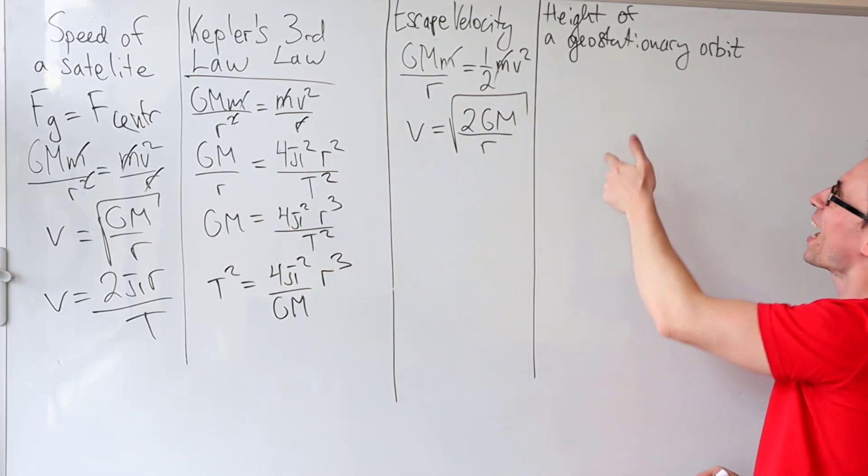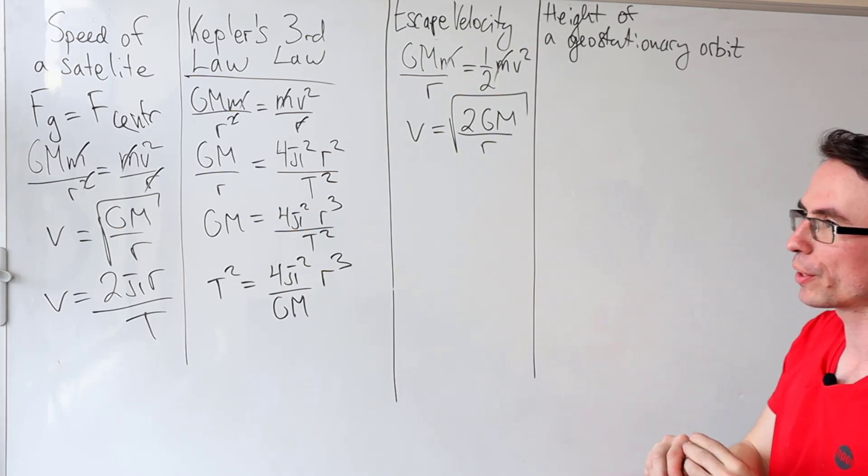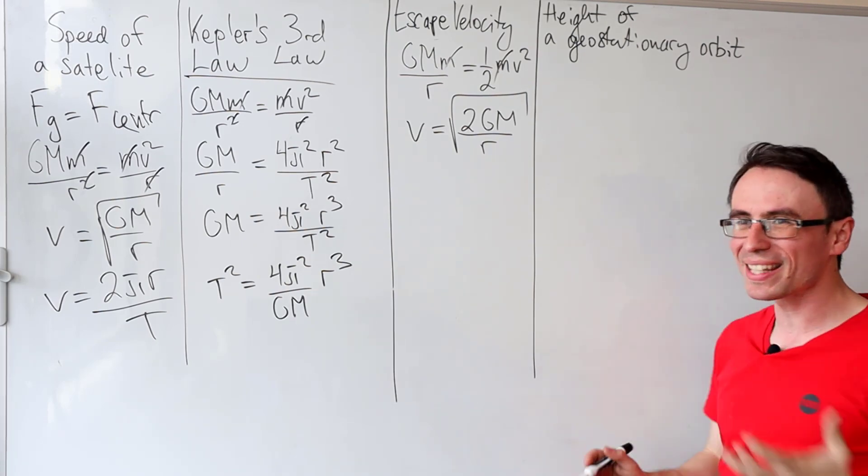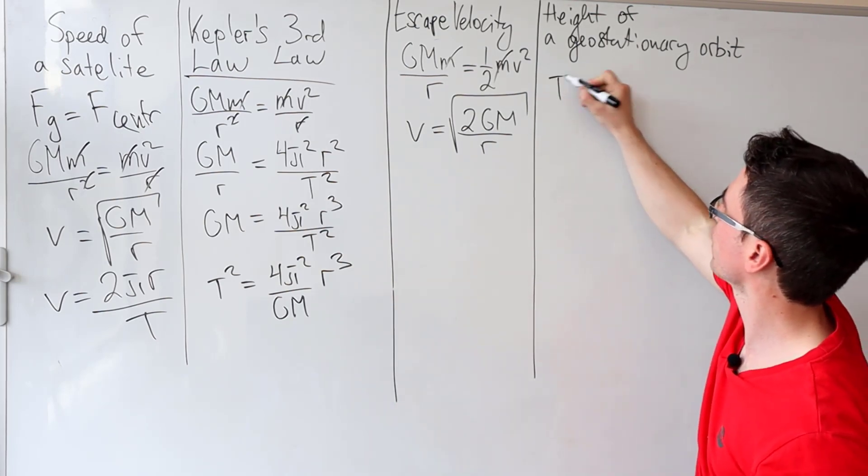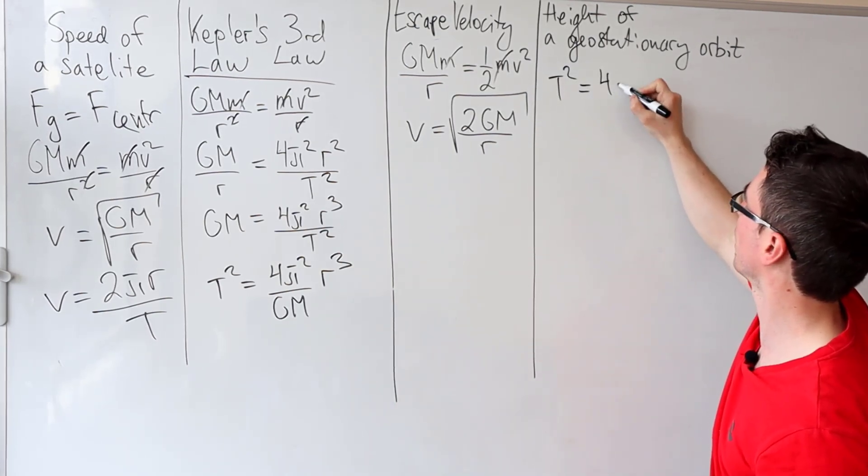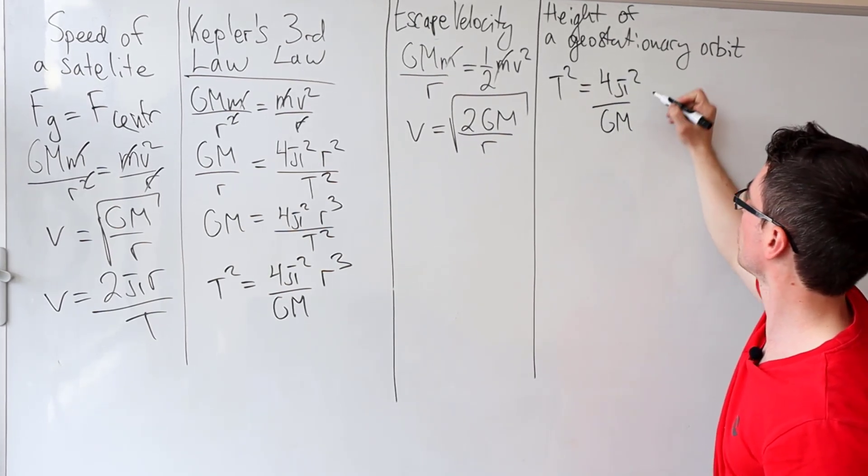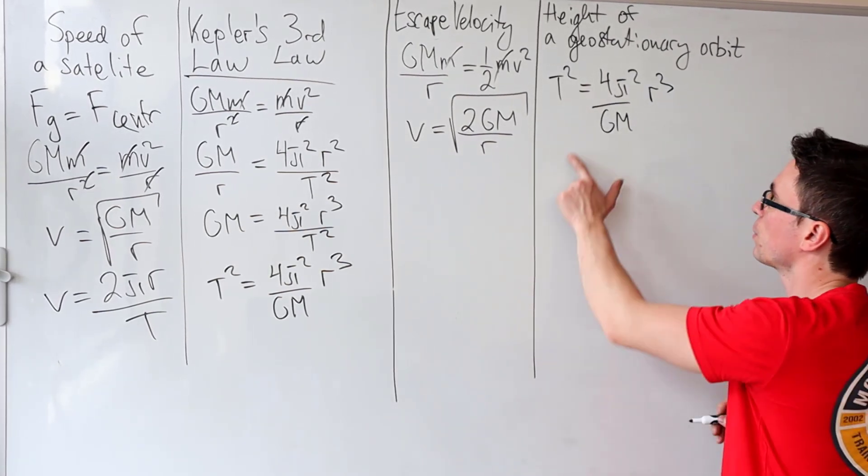Let's do one more and that will be the height of a geostationary orbit. This is best done via Kepler's third law, which we've derived over here. So t² will be given by 4π²/GM r³.